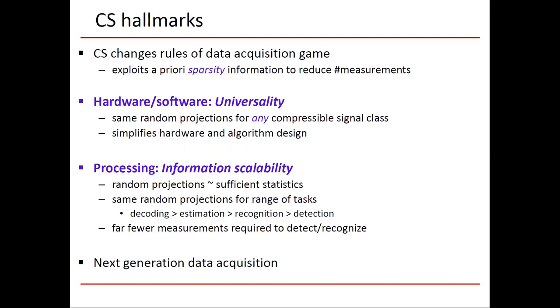On the signal processing side, we have what could be referred to as information scalability. Random projections can be thought of as sufficient statistics. When we have more random projections, we have more information and we can perform more complicated statistical inference tasks. If we have more measurements, we can estimate or decode the signal. Lighter tasks might be recognizing objects or possibly detection, seeing if something is there or not. Overall, far fewer measurements are going to be required to perform the lighter statistical inference tasks.